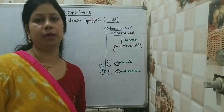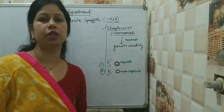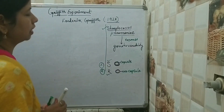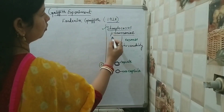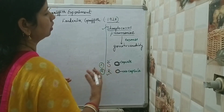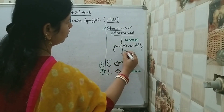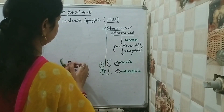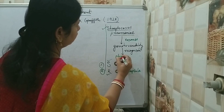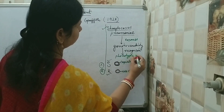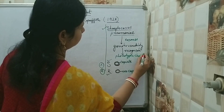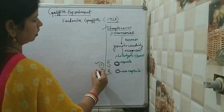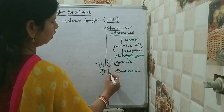Welcome back friends to another video tutorial of Anita Bio Concept. Today I am going to discuss about Griffith's experiment, in which in the year 1928 he proved the transforming principle of DNA. For this he used Streptococcus pneumoniae bacteria, which expresses genetic variability like other microorganisms and can be recognized by observing the existence of bacteria with different phenotypic characteristics.